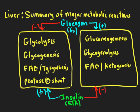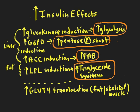Focusing on the liver, a number of enzymes are induced by insulin. Glucokinase — step one of glycolysis — is induced, turning on glycolysis. Glucose 6-phosphate dehydrogenase, a key enzyme in the pentose phosphate shunt, is induced, turning on that pathway. Acetyl-CoA carboxylase is induced, turning on fatty acid biosynthesis. All of this is occurring in the liver.